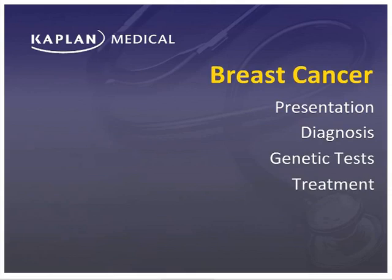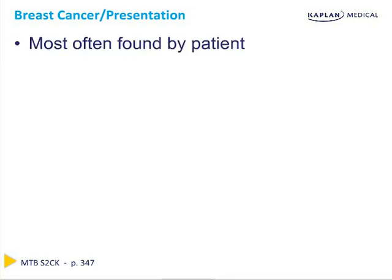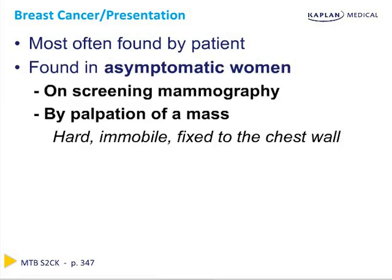In this section, we'll cover how the test makers may describe a woman presenting with breast cancer, the diagnostic workup including special genetic markers such as BRCA1 and 2, as well as treatment options. Most breast cancer is detected when a woman notices a lump in her own breast. However, with the increase in screening mammography, more asymptomatic women are diagnosed with early stage, small breast cancers. Less commonly, a medical practitioner can detect a mass on physical exam, though recommendations regarding routine self-breast and physician breast exams are controversial and probably not tested on USMLE Step 2.